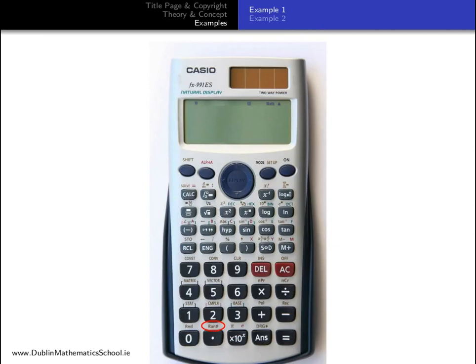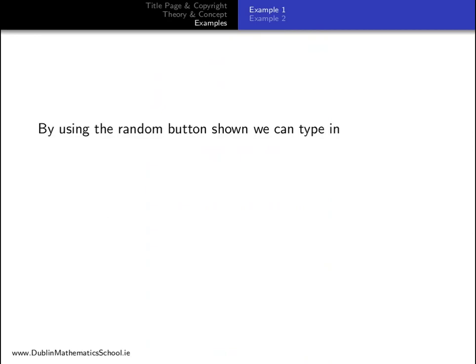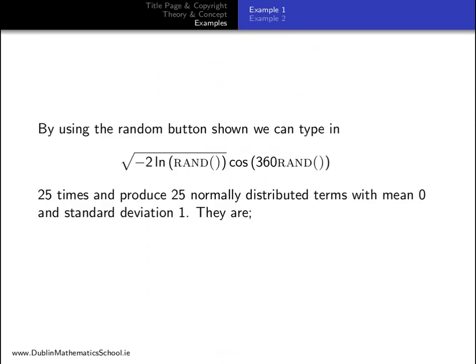What is the random button shown is the rand button on our calculator. By using the random button shown, we can type in square root minus 2 log rand cos 360 rand. And type this in 25 times. And we will produce 25 normally distributed terms with mean 0 and standard deviation 1. They are as follows.